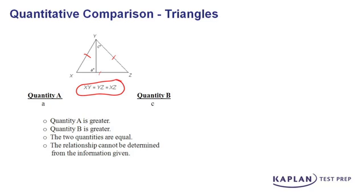Let's look at our two quantities. We want to compare the value of A to the value of C. What's important here is the exterior angle theorem for triangles. This is how it goes.